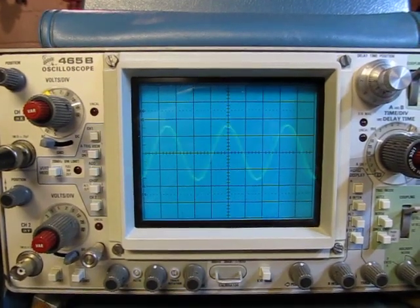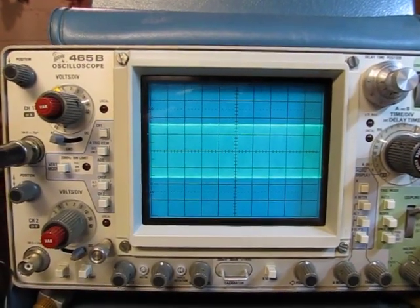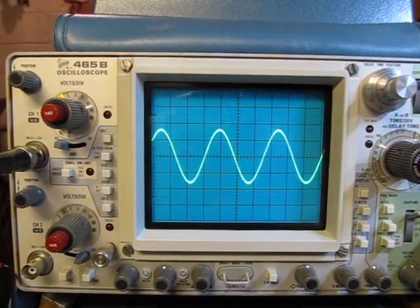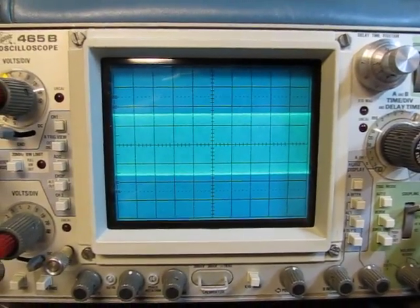And if I adjust this too far down, see the trace is just kind of rolling. I don't have anything there anymore. And if I bring it up too far, I can see I go up past the top of the waveform, and I'm not triggered anymore. I'm just getting kind of a free-rolling display.